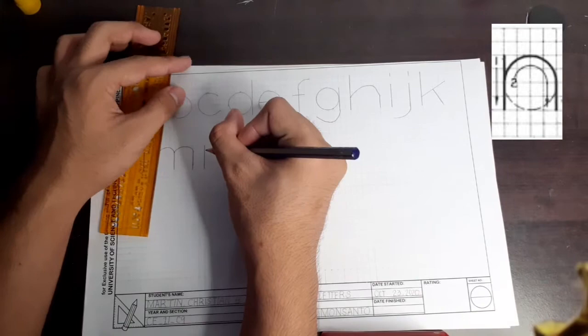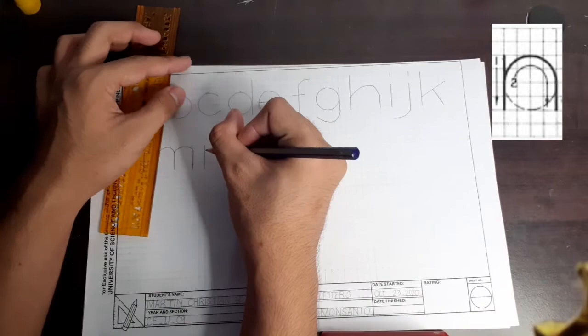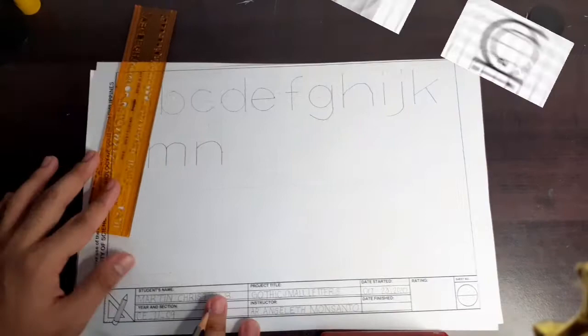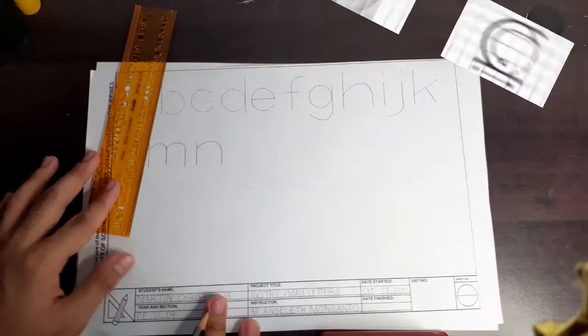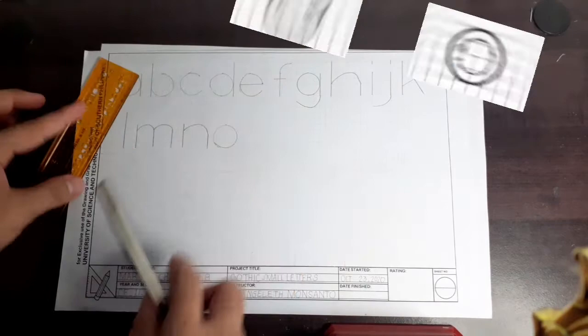N is the same with the first two steps of letter M, but it occupies five spaces. To achieve a perfect circle for letter O, we will use this cup. First drawn is a semicircle on the left, then a semicircle on the right.